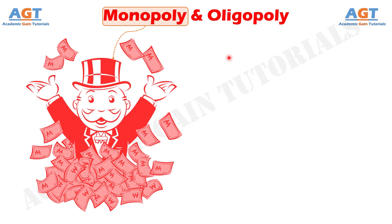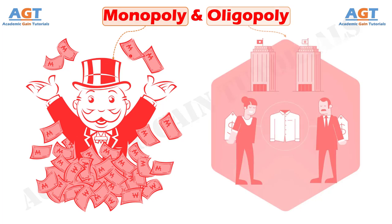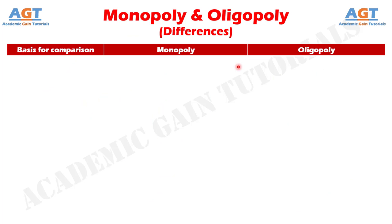Monopoly is a market condition whereby only one seller is selling an entirely heterogeneous product at the marketplace, having no close substitutes to the product offered by the seller. On the other hand, Oligopoly is a type of competition whereby there are a few number of vendors in the market selling differential products or nearly differential products. So, let's look into the basic differences between Monopoly and Oligopoly in a tabular form.